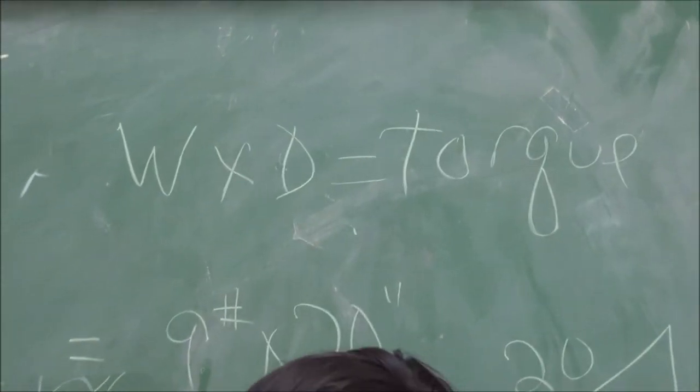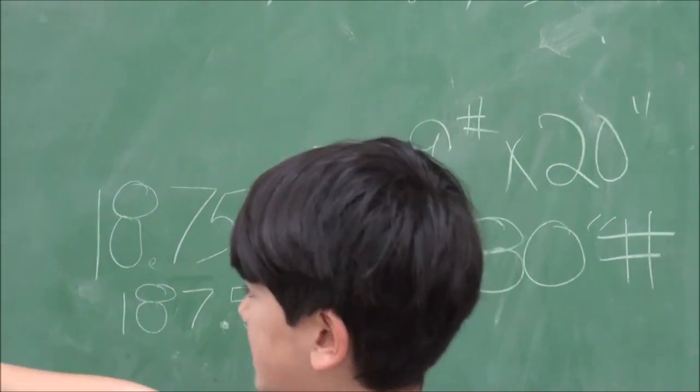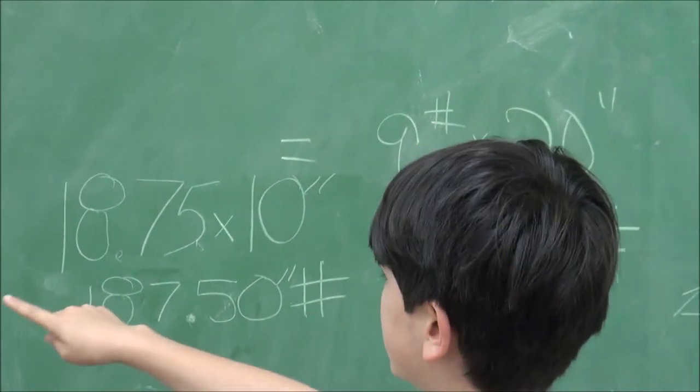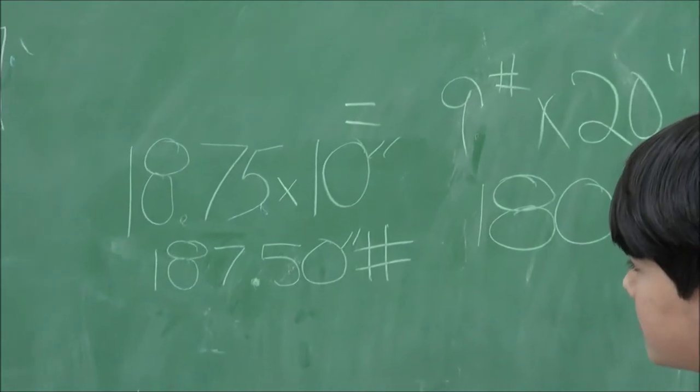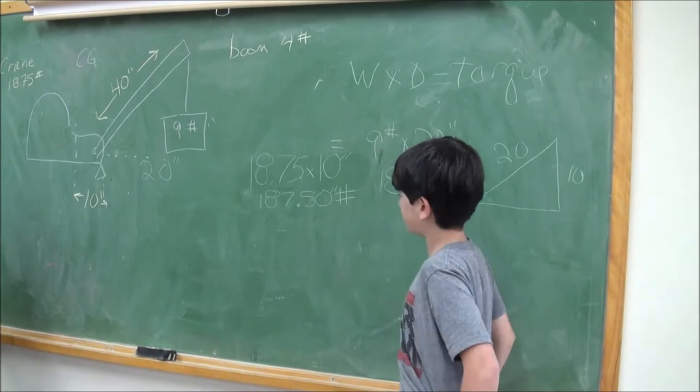The weight of the crane is 18.75 pounds times 10 inches from the center of gravity to the pivot point. If you multiply those two to find the torque, your answer is 187.50 inch pounds.